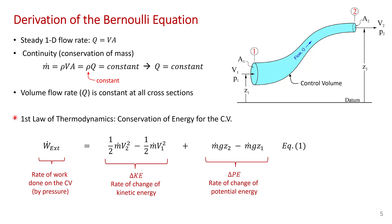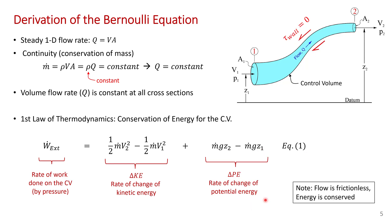Using the first law of thermodynamics, which is conservation of energy for the control volume, we can write this expression. The rate of work done by the pressure forces at the inlet and outlet equals the rate of change of kinetic energy from inlet to outlet — that's one-half m-dot v² at the outlet minus one-half m-dot v² at the inlet — plus the rate of change of gravitational potential energy, m-dot g z2 minus m-dot g z1.